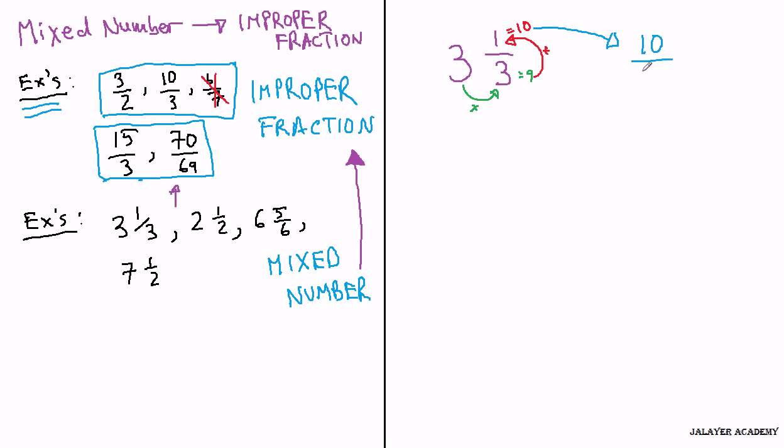And our denominator remains the same as the original. So, 3 and one third equals 10 over 3. So, let's see that again because there's a lot going on here.